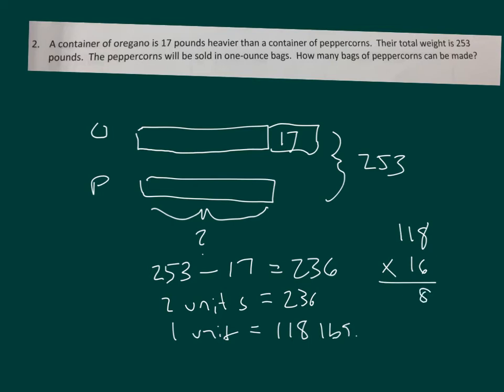6 times 8 is 48. 6 times 1 is 6, plus 4 is 10. Zero. Regroup a 1. 6 times 1 is 6, plus 1 is 7. Places to 0. 118. And then add those together. 1,888 ounces.